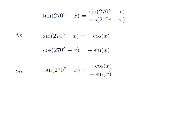Let us apply the above identities in the expression of tangent of 270 degrees minus x. So, tangent of 270 degrees minus x is equal to minus cosine of x divided by minus sine of x. The negatives in the numerator and denominator cancel each other, and cosine of x divided by sine of x is equal to cotangent of x. So, tangent of 270 degrees minus x is equal to cotangent of x.